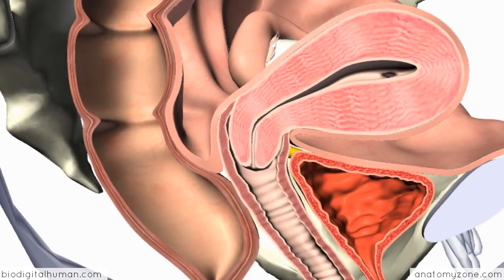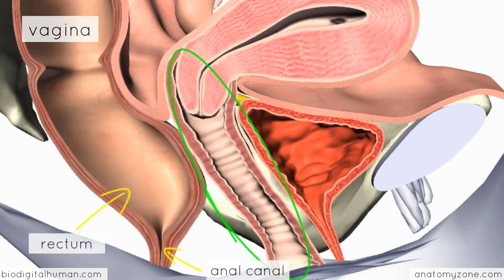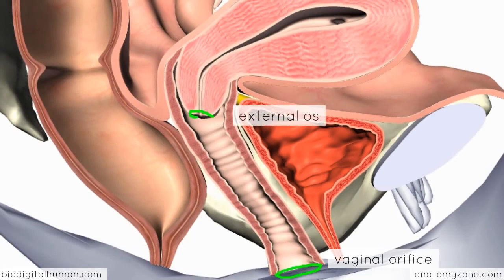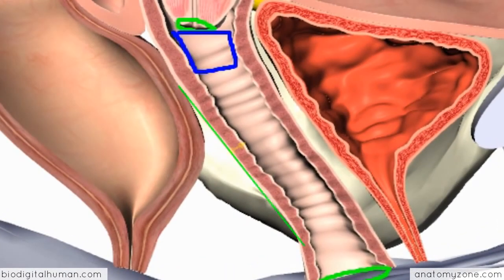The lower part of the female reproductive tract is the vagina, which is a fibromuscular tube. It lies anterior to the rectum and the anal canal, and behind the bladder. The vagina runs between the external vaginal orifice up to the external os of the cervix, and this internal end of the vagina is known as the vaginal vault. Just like the uterus, the vagina has three layers: the outer connective tissue layer, the middle muscular layer, and the internal mucosa.